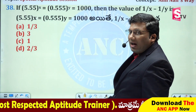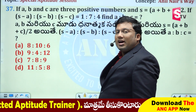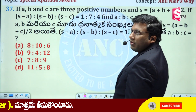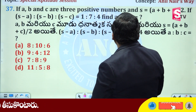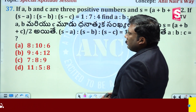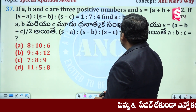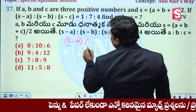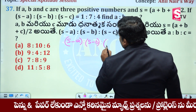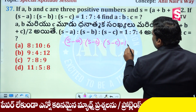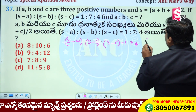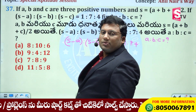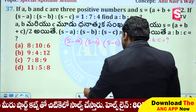What are the main methods? S is equivalent to (a + b + c) / 2. S minus a, S minus b, S minus c. The ratio is equal to (S minus a) : (S minus b) : (S minus c). A squared, S minus b squared, S minus b squared, S minus c.